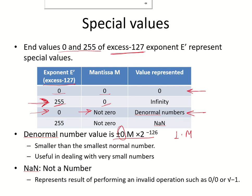If your operation was an invalid operation, such as zero divided by zero or the square root of minus one, the system generates a Not a Number for you, which is an invalid number. It is shown by making the exponent 255 whereas the mantissa is still not zero.